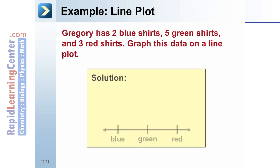Solution: Draw a number line with three sections labeled blue, green, and red. Gregory has 2 blue shirts, so put 2 x's above blue. Gregory has 5 green shirts, so put 5 x's above green. Lastly, Gregory has 3 red shirts, so put 3 x's above red.